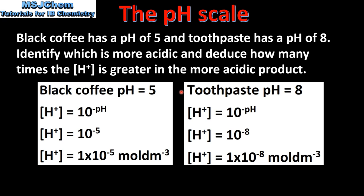Next we look at the toothpaste. Toothpaste has a pH of 8 and the hydrogen ion concentration is equal to 10 to the negative pH, so that's 10 to the power of negative 8. The hydrogen ion concentration is 1 times 10 to the negative 8 moles per decimetre cubed.